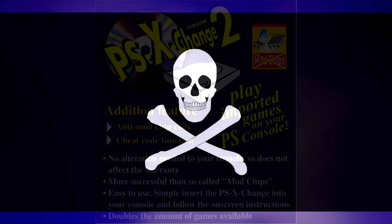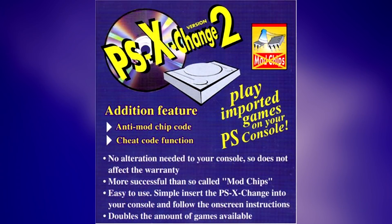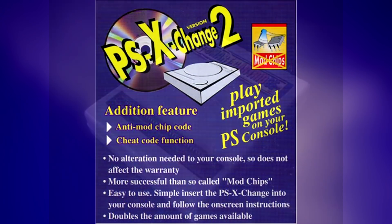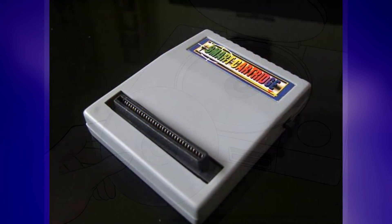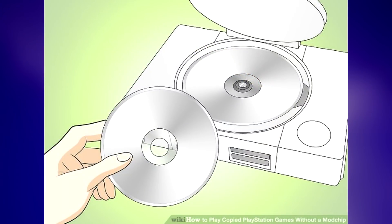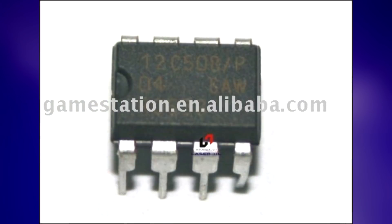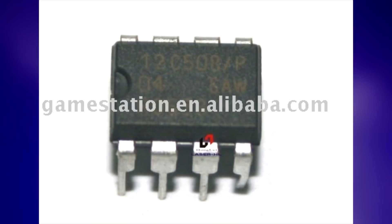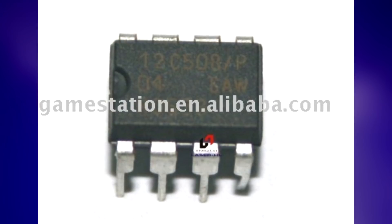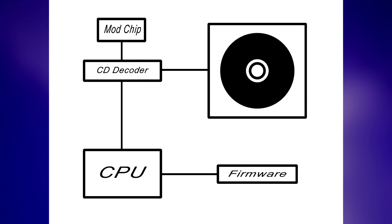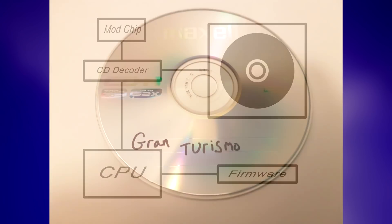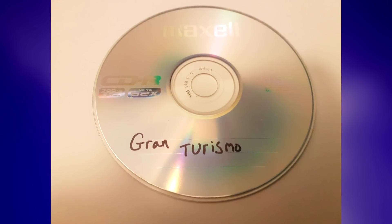There were various methods: boot CDs, cartridges, complex tricks involving swapping a legitimate disk for another one as it was loading. But the simplest and easiest for the end user, once it was installed, was to use a mod chip. This was a device that could be soldered into the system's mainboard and trick the PlayStation into booting disks that it wouldn't usually boot.